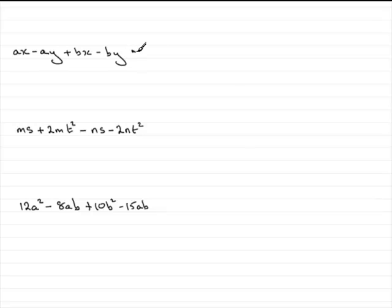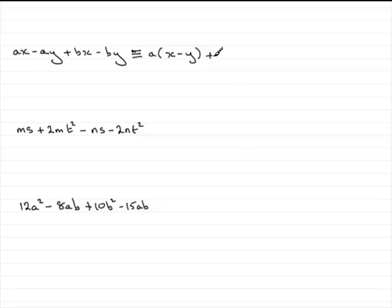What we do is group those two terms together, put an a outside a bracket, and inside the bracket we have x minus y. So when you expand this you get ax minus ay — this first pair of terms. Now we look at the next pair of terms, and in these two terms we've got b as a common factor. So we write plus b, open a bracket, and inside we have x minus y. When we expand this we get plus bx minus by.